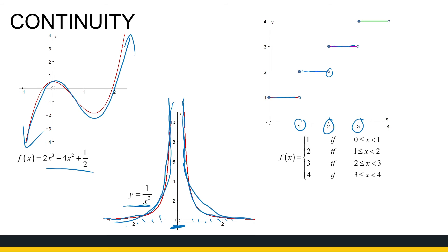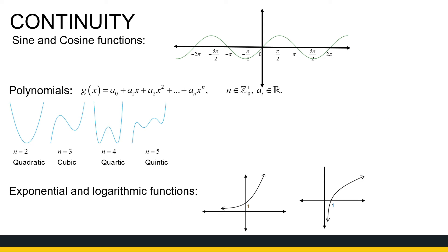In general, sine and cosine functions are continuous everywhere, nice waves that carry on. Polynomials, whether they're straight lines, quadratic, cubic, quartic, quintic, they're all continuous. Exponential and logarithmic functions are continuous everywhere on their domains.